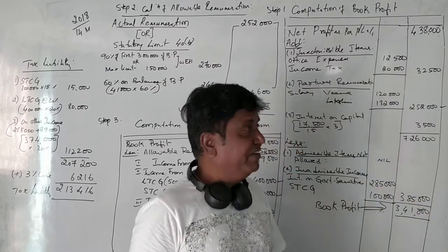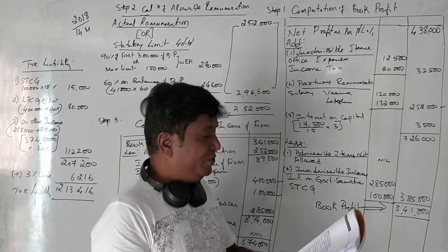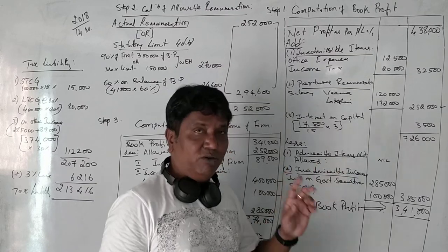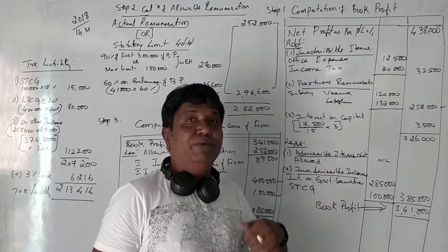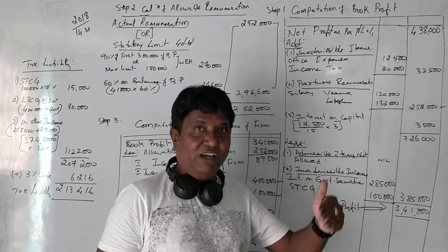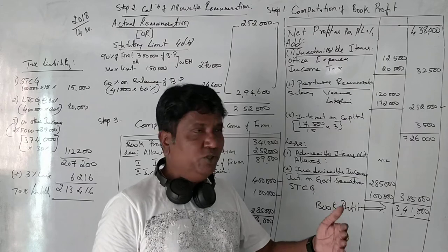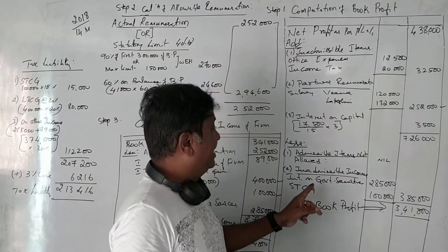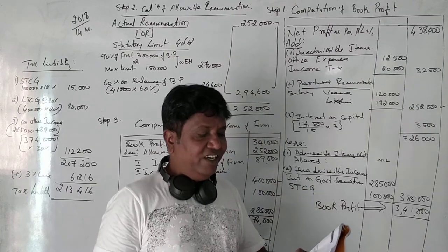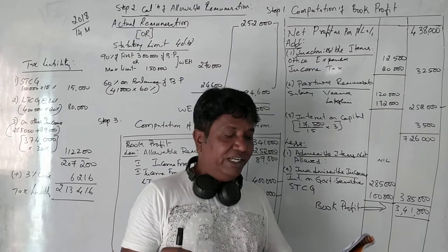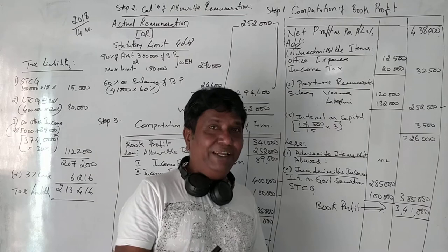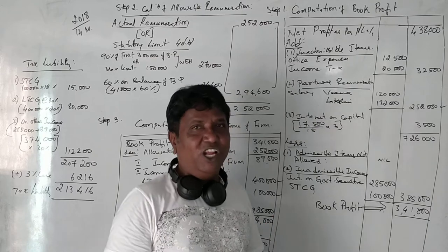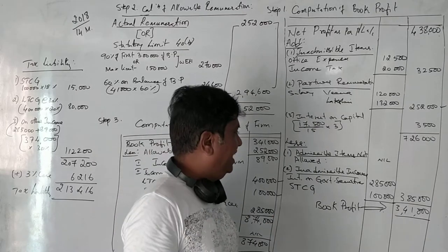Adding all these items, we get Rs. 7,26,000. Now we should deduct some items. Admissible items not debited in the profit and loss account — no such items are given in the adjustments, so leave it. For inadmissible incomes on the credit side, interest recovered from Veena and Laxmi on drawings is Rs. 2,500. Since interest on drawings is allowed as a deduction, we can skip it.